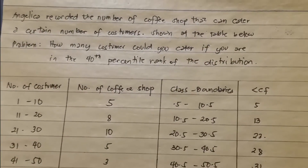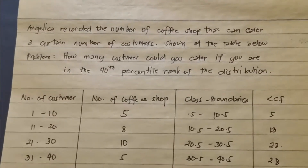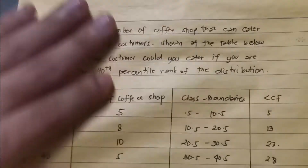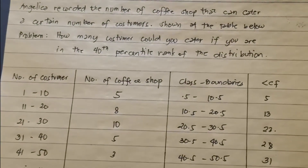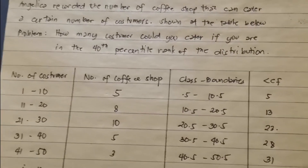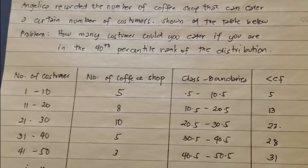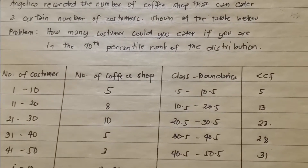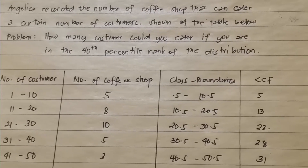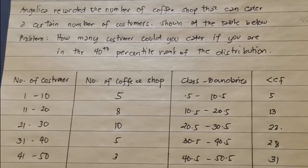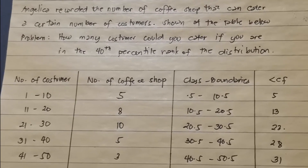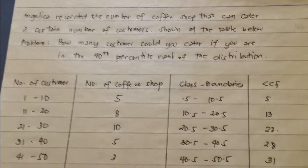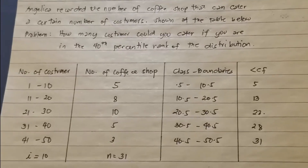Let's have an example for solving a percentile value. Angelica recorded the number of coffee shops that can cater a certain number of customers, shown in a table. The problem asks: how many customers could you cater if you are in the 40th percentile of the distribution?